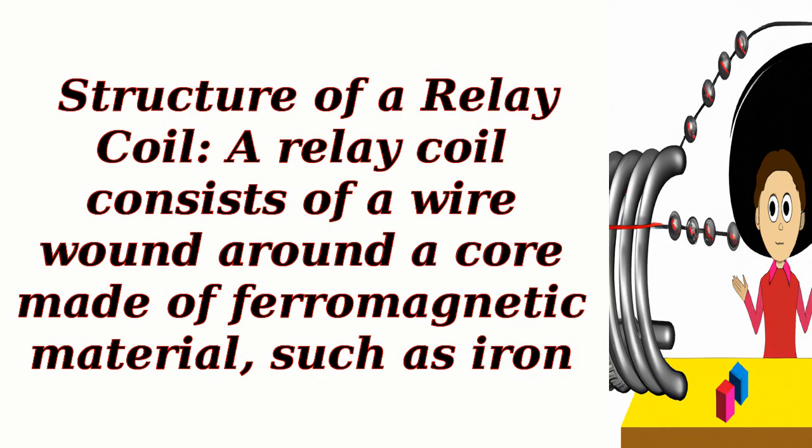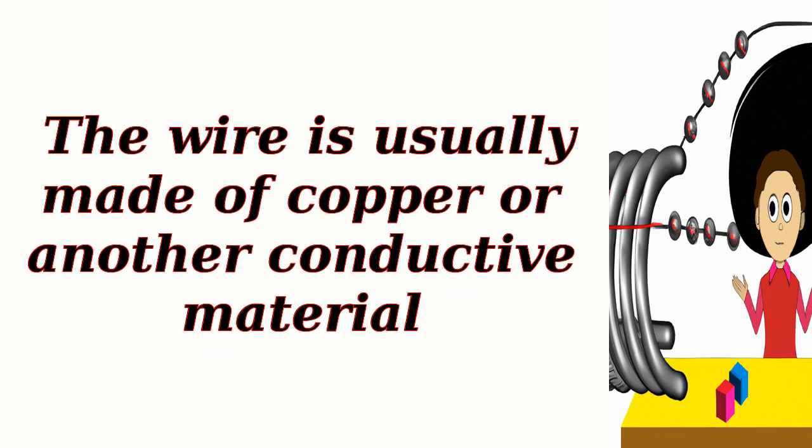Structure of a relay coil: A relay coil consists of a wire wound around a core made of ferromagnetic material, such as iron. The wire is usually made of copper or another conductive material.